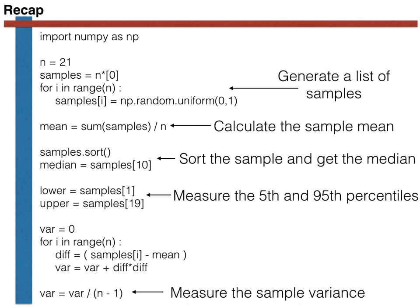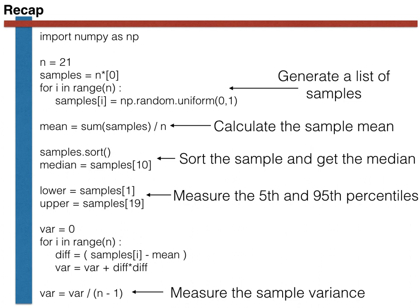In addition to being able to calculate these summary statistics for a uniform random variable, you have now also learned how to generate random variables from the uniform, binomial, and geometric distributions.